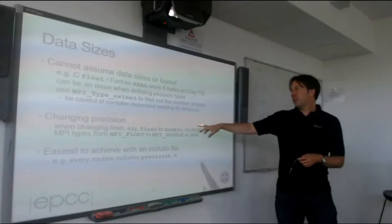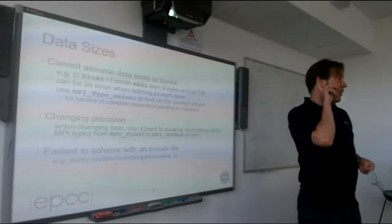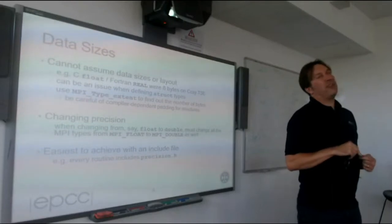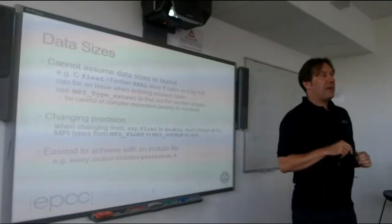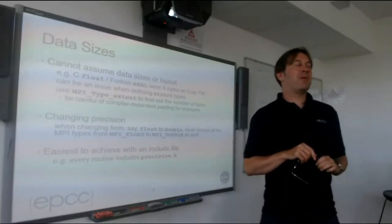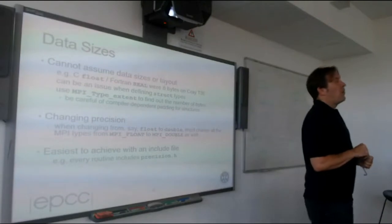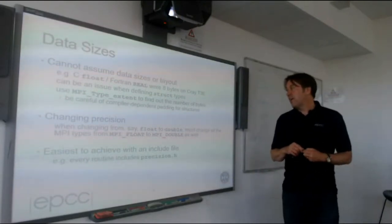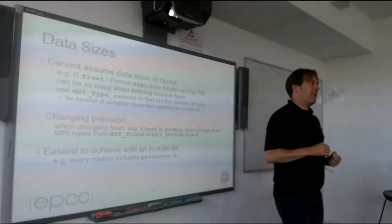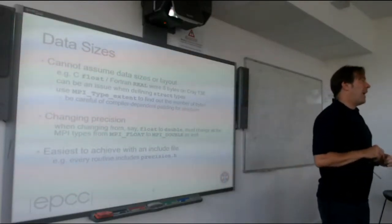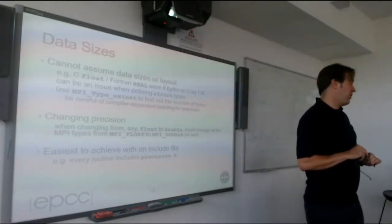The main issue is be careful. Where it catches people is when they do MPI type structure. One thing I think is very interesting is changing precision. A lot of people write codes in single precision, and then they know they should run them in double precision. They say, oh it's okay, there's this magic compiler option which changes all my single precision variables to double precision. That's not going to work with an MPI code.